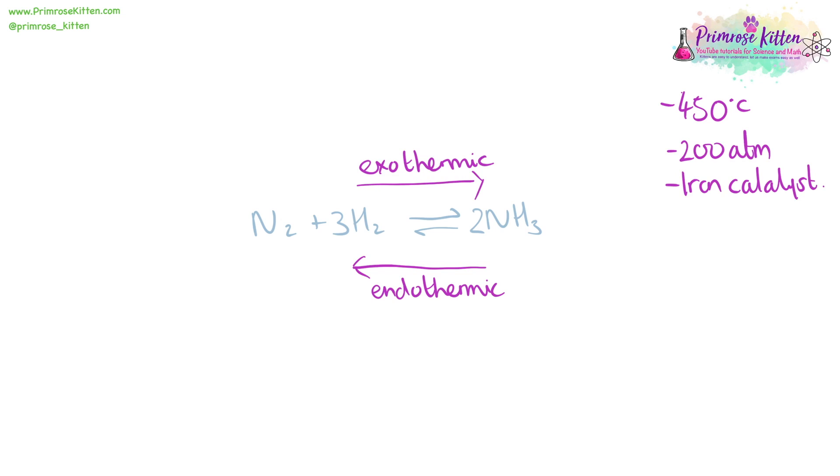The forward reaction is exothermic. So this tells us, using Le Chatelier's principle of dynamic equilibrium, that we should be using a low temperature if we want to drive the forward reaction. But at a low temperature we have a low rate of reaction. So even though using the high temperature of 450 degrees drives the backwards reaction, away from ammonia towards the reactant gases, the rate of reaction is so fast that it is constantly cycling between the two. So 450 degrees is a compromised temperature.